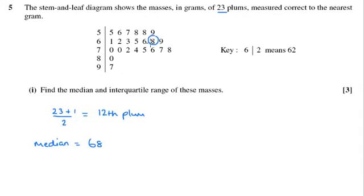In order to then find the interquartile range, we need the lower quartile and we need the upper quartile. So because the median was an actual value, that's nicely split our data into two halves. We've got 11 numbers on this side and 11 numbers on that side.